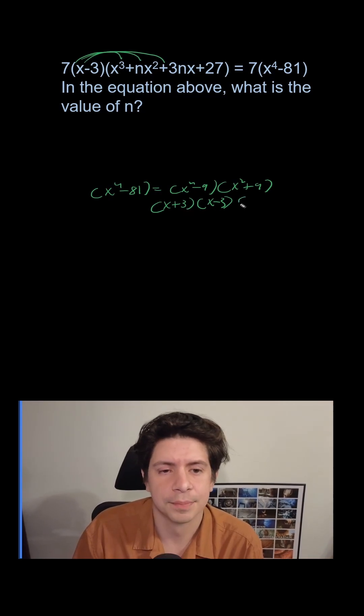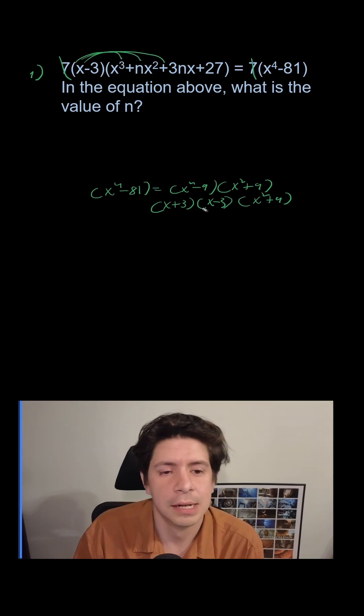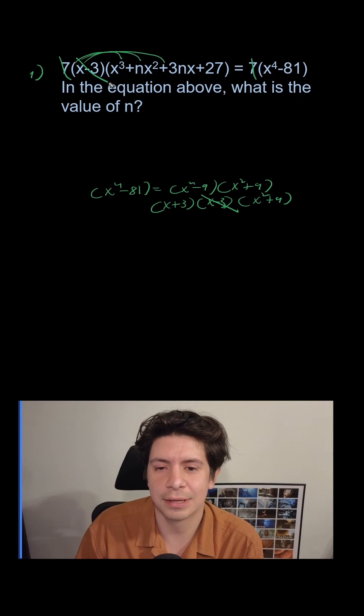(x + 3)(x - 3) times (x² + 9). The 7s don't matter because they both have 7, so forget about the 7s. We have x - 3 and x - 3, so now we can cancel out the x - 3s.